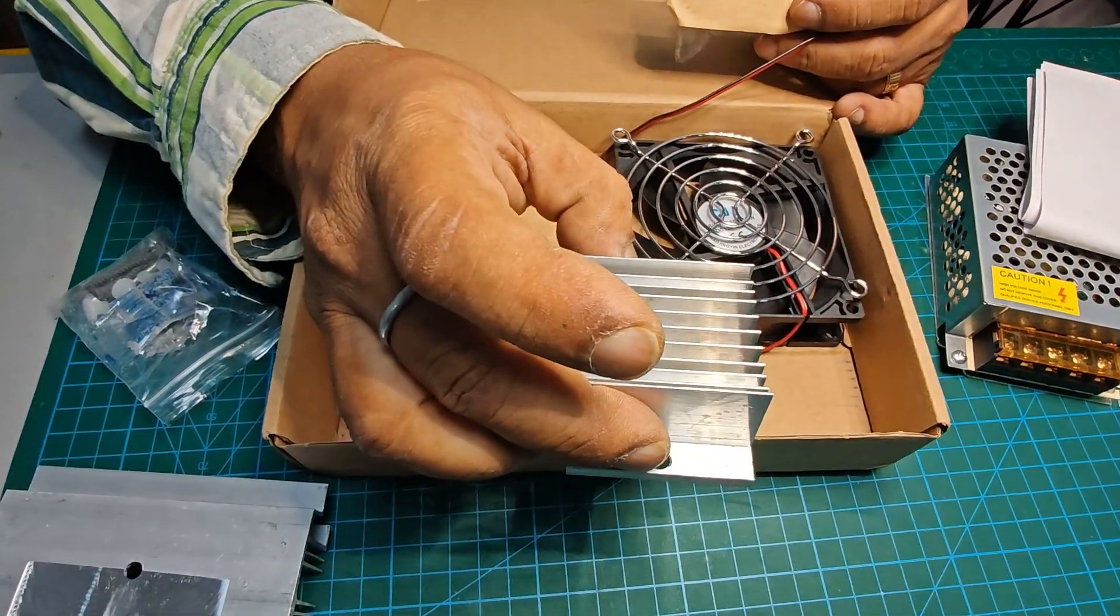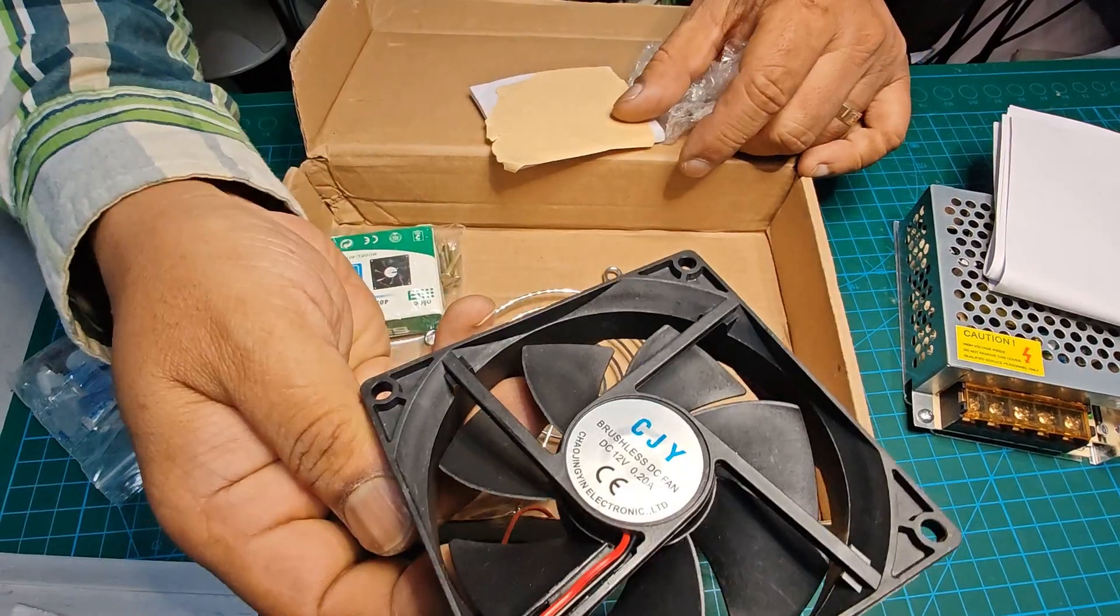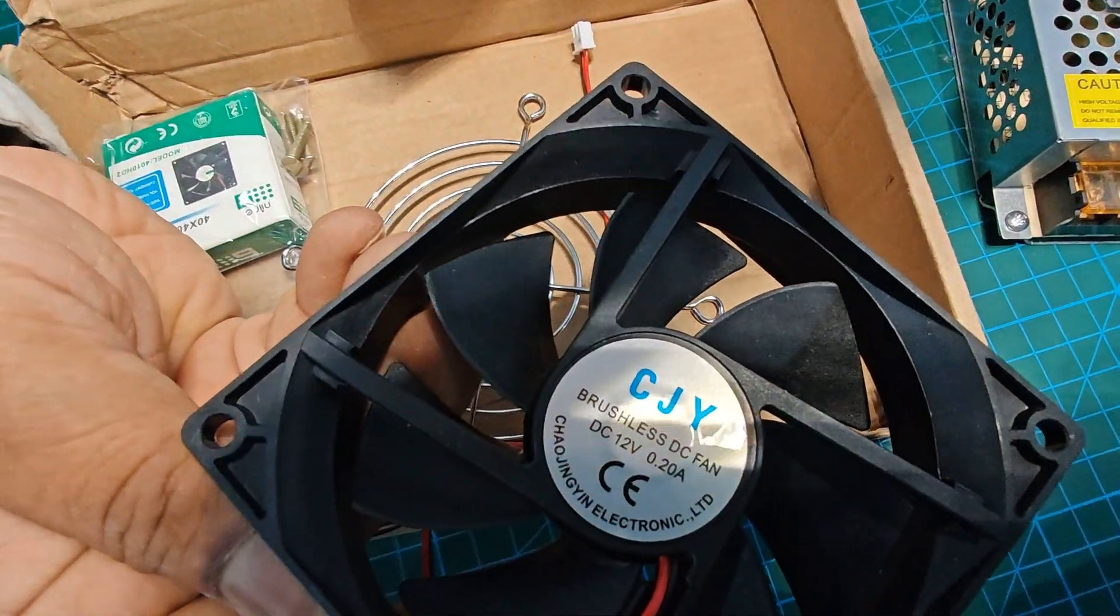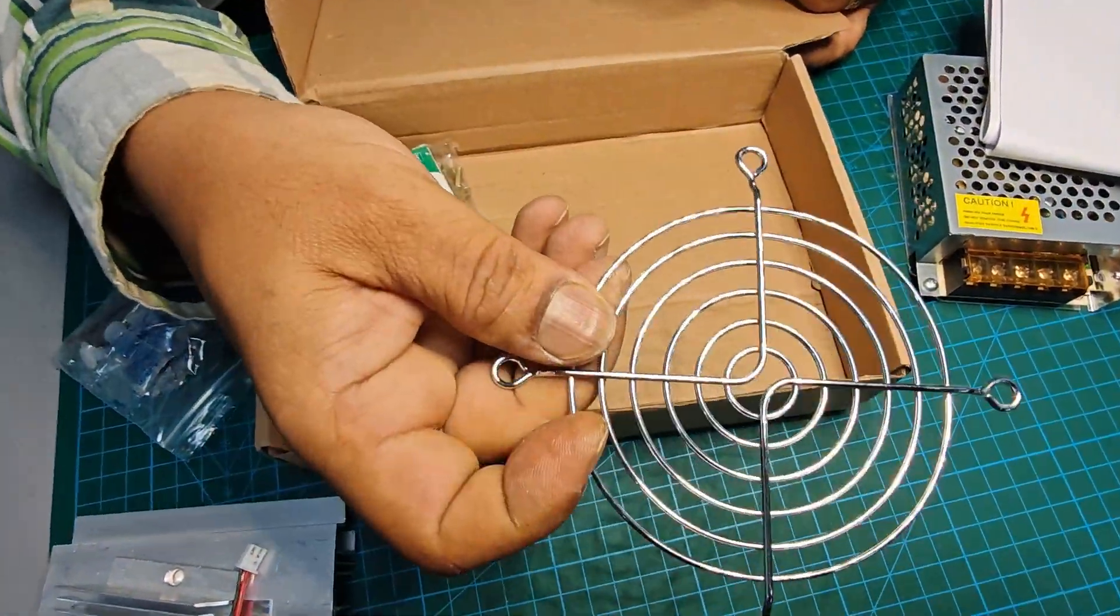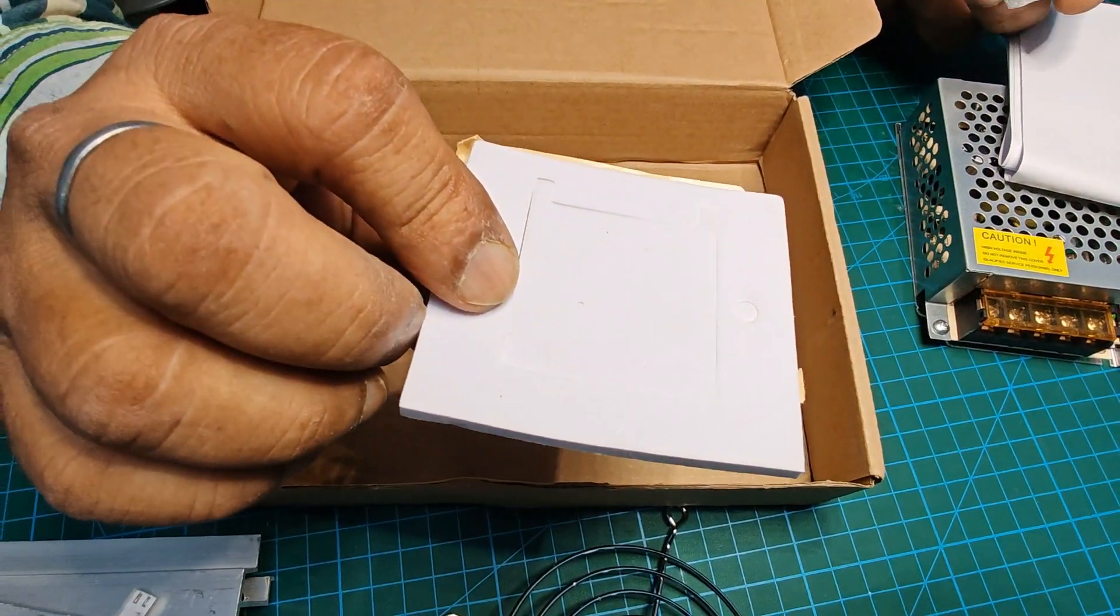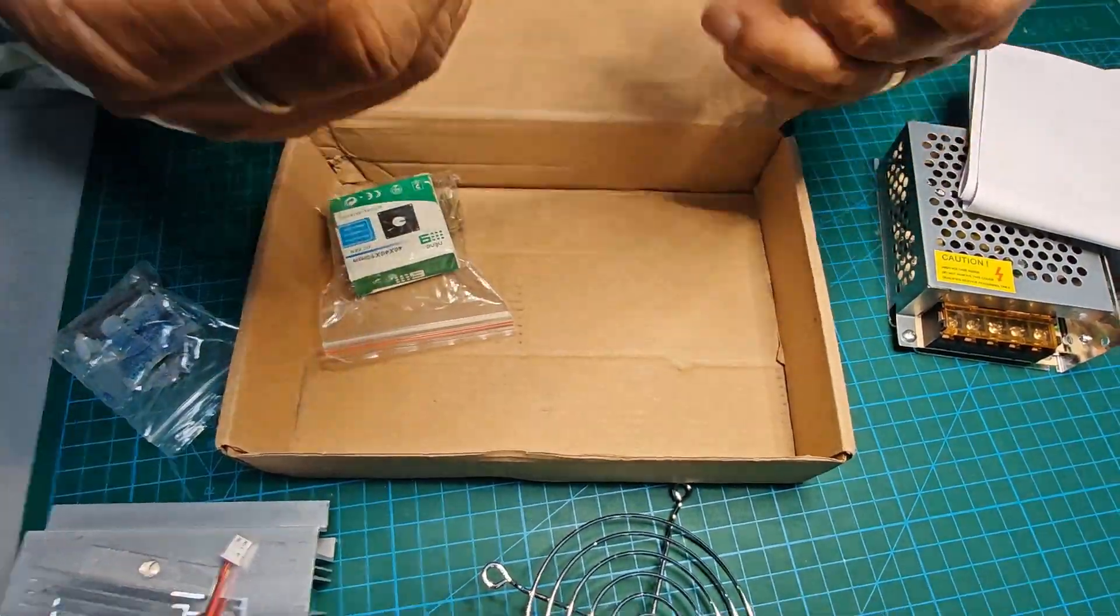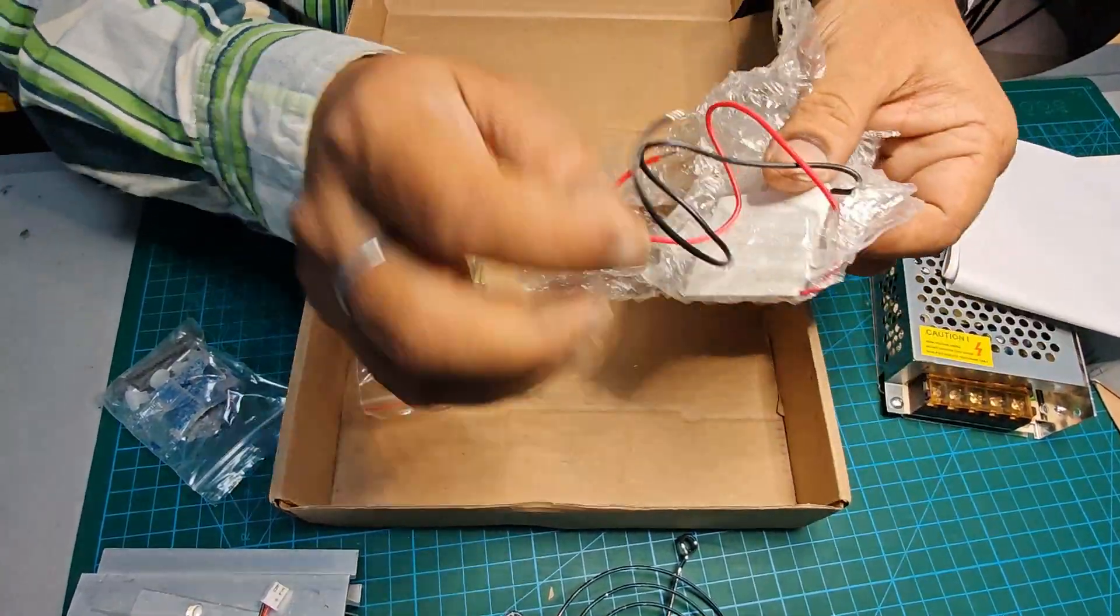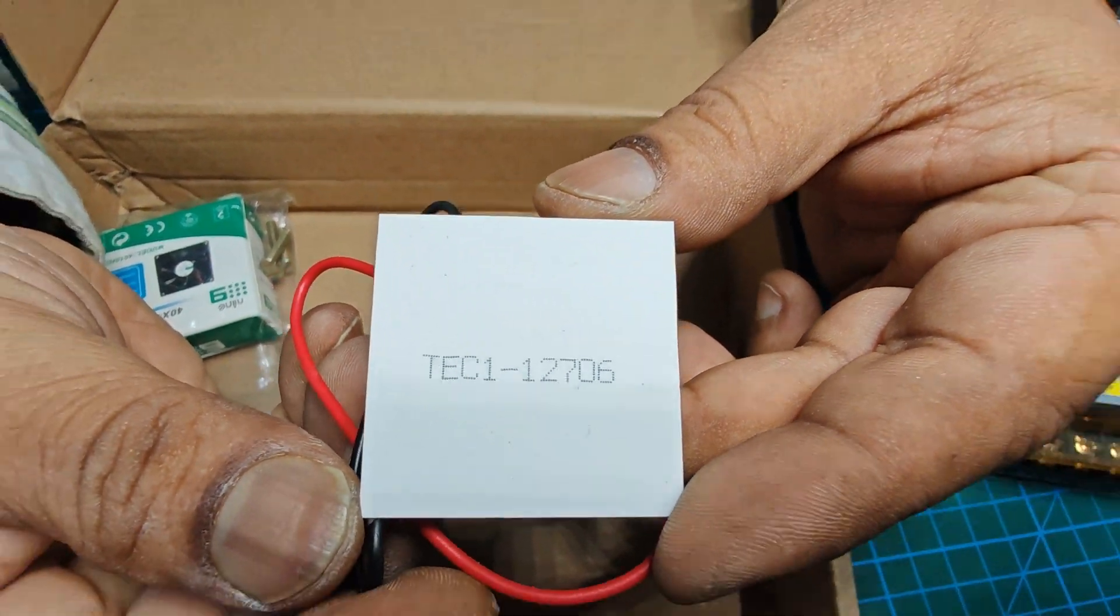So this is another small heat sink which is going to release the cool air. The fan to reduce the heat, which is 12 volt 0.2 ampere. For protection of the fan, we have got an insulator which should be placed between the Peltier and heat sink. And the most important, the Peltier sensor. As I told you, it is 12706, so it is 12 volt 6 ampere Peltier sensor.